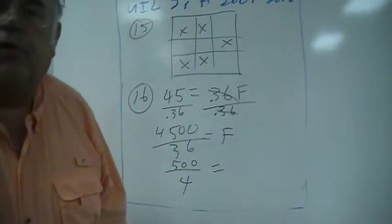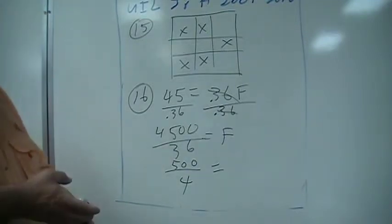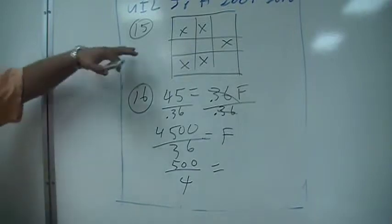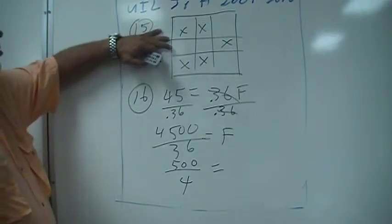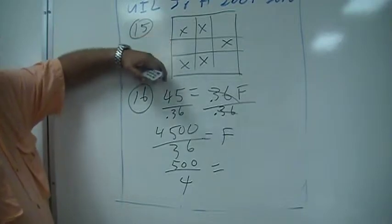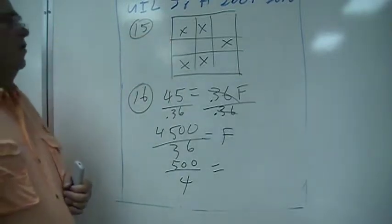All right, I missed this yesterday when I worked it, but anyway, what's the whole number of squares that can be filled with X's without having any row, column, or diagonal filled up?